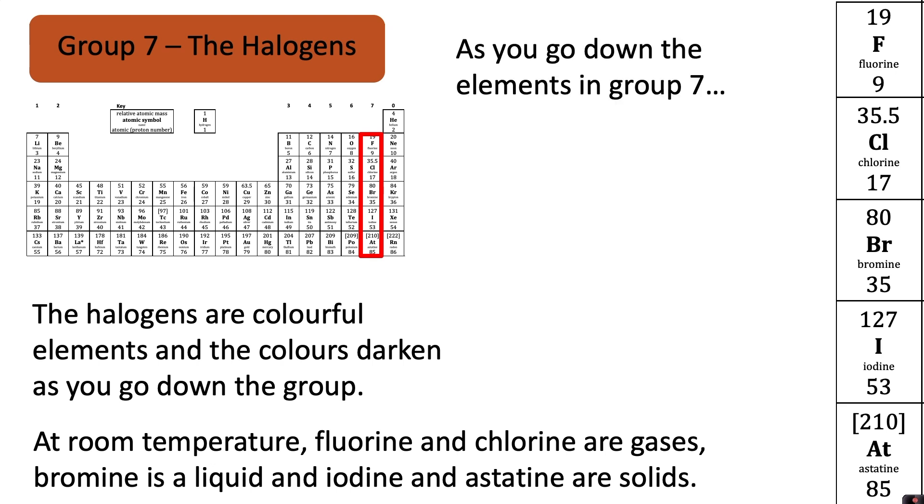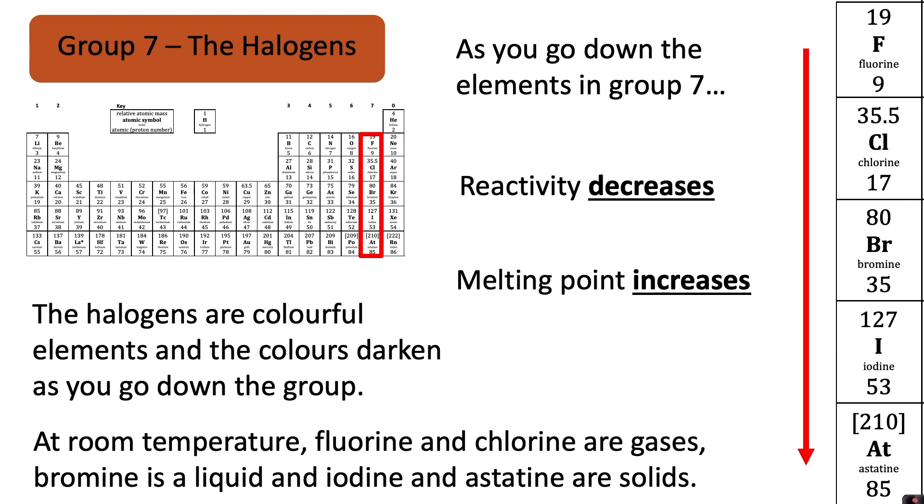As you go down the elements in group seven reactivity decreases, melting point increases and boiling point increases. So you'll notice this is the opposite of group one.